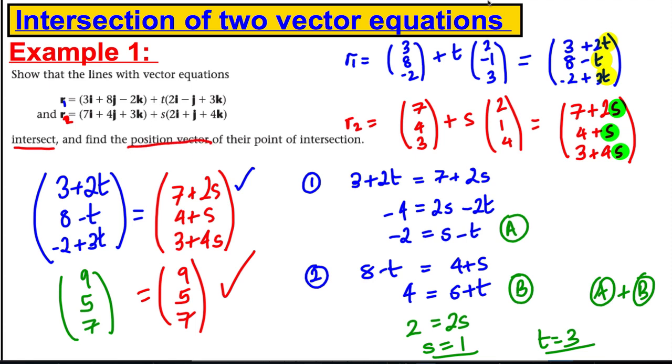Now there could be cases where you try and solve these equations and there's no solution, or you solve for s and t and you substitute back in and it makes two of them the same and one of them different. Then there's no point of intersection. The x and the y and the z components of the position vector must all be equal for this to be true. If you're trying to find a case where they're not true, you would try and solve, and when you can't find an s or t, or you find an s and t and it doesn't make them the same, then there is no intersection.